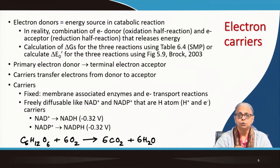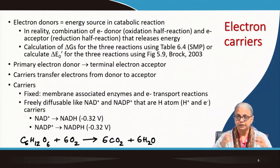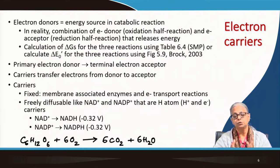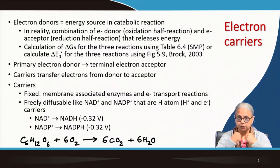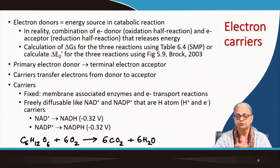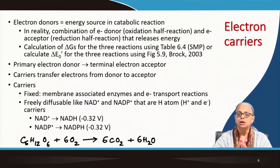Now let us come to electron carriers. We know that electron donors are the energy source in catabolic reactions, but in reality it is the combination of electron donor and acceptor that releases energy. There may be sufficient energy in the electron donor by itself, but what we are going to do in the assignment is calculate delta G's for three different reactions.